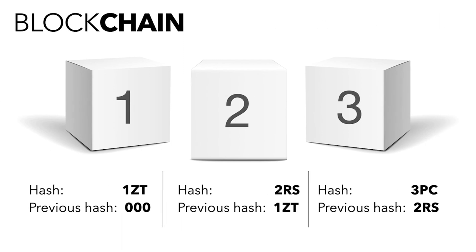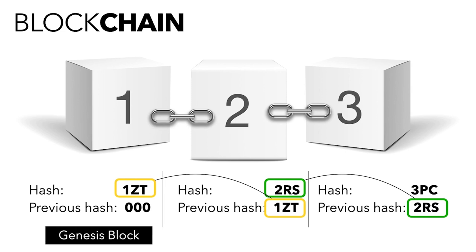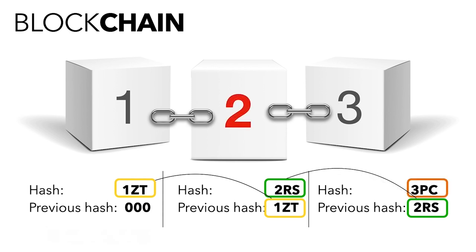To understand how blocks create a blockchain, let's look at an example. Here we have a chain of three blocks. Notice how block three points back to two, and two points back to one. The previous hash creates the chain in the blockchain. Note that block one is unique — there is no previous hash. This block is called the genesis block.